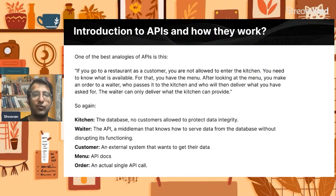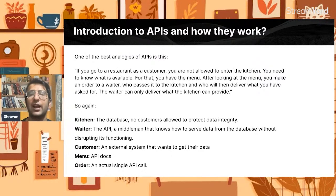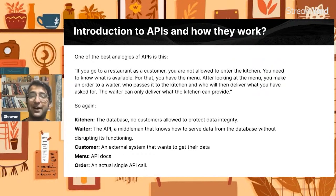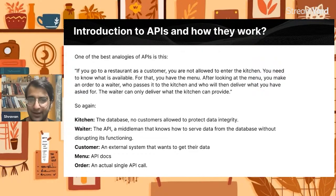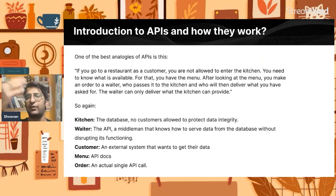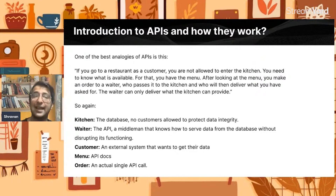One of the best analogies for how an API works: assume you are going to a restaurant as a customer. You are not allowed to enter the kitchen. You need to know what is available, so you have the menu. After looking at the menu, you make an order to the waiter, who passes it to the kitchen, and you get what you asked for. So here, the kitchen is the database, the waiter is the API that sends the request to the kitchen, the customer is you, the menu is the API documentation, and the order is the API call.